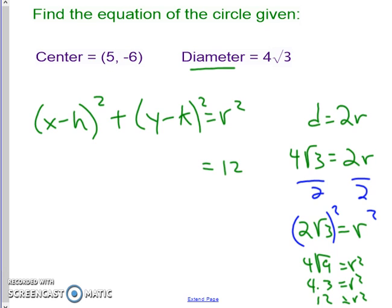And then we can substitute in our h and our k for our center, so we'll have x minus 5 quantity squared plus y times the quantity y plus 6 quantity squared.